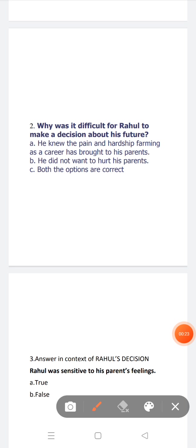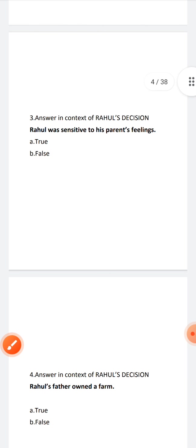Now next, why was it difficult for Rahul to make a decision about his future? He knew that the pain and hardship of farming as a career has brought to his parents. He did not want to hurt his parents. Both the options are correct.